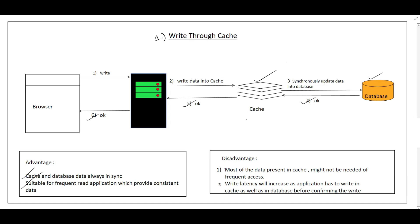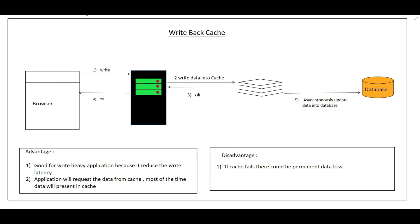The disadvantages of Write Through Cache: most of the data written to the cache might not be needed for frequent access, so the cache size increases unnecessarily. Also, write latency increases because every write must go first to the cache and then to the database before confirming the IO operation.